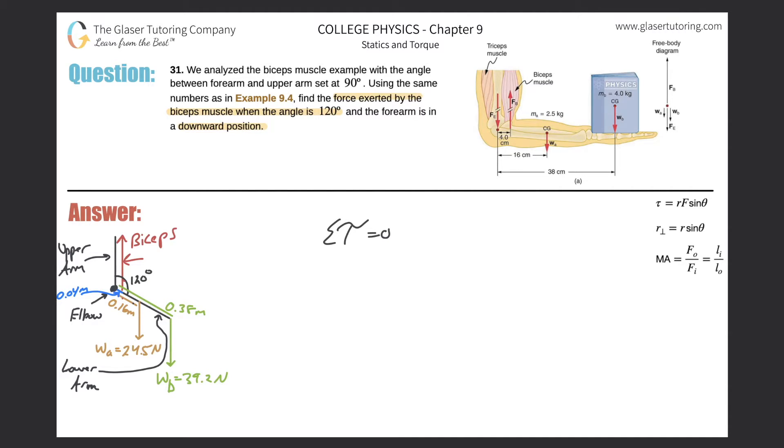Now there's three torques being produced about this axis of rotation on this rigid arm here, the lower arm, the forearm. I got the torque produced by the biceps, torque produced by the weight of the arm, and torque produced by the weight of the book. Alright, if the biceps muscle force acts, it's going to rotate this counterclockwise and therefore the torque should be positive. So the torque of the biceps is positive.